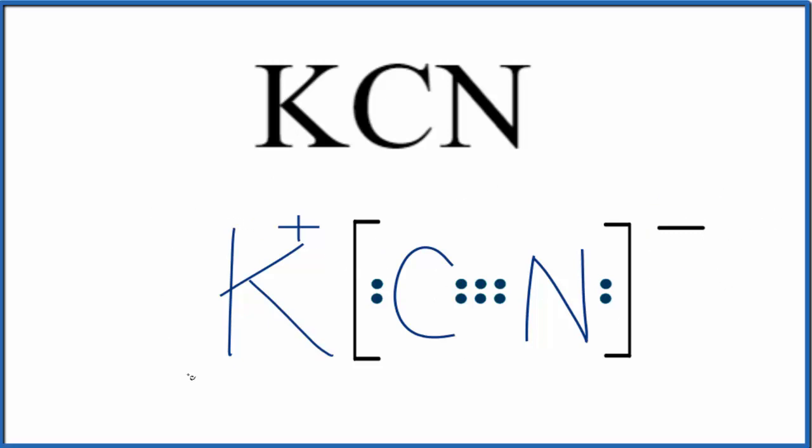Sometimes you'll see brackets around the potassium ion as well. This is Dr. B with the Lewis structure for KCN, potassium cyanide. Thanks for watching.